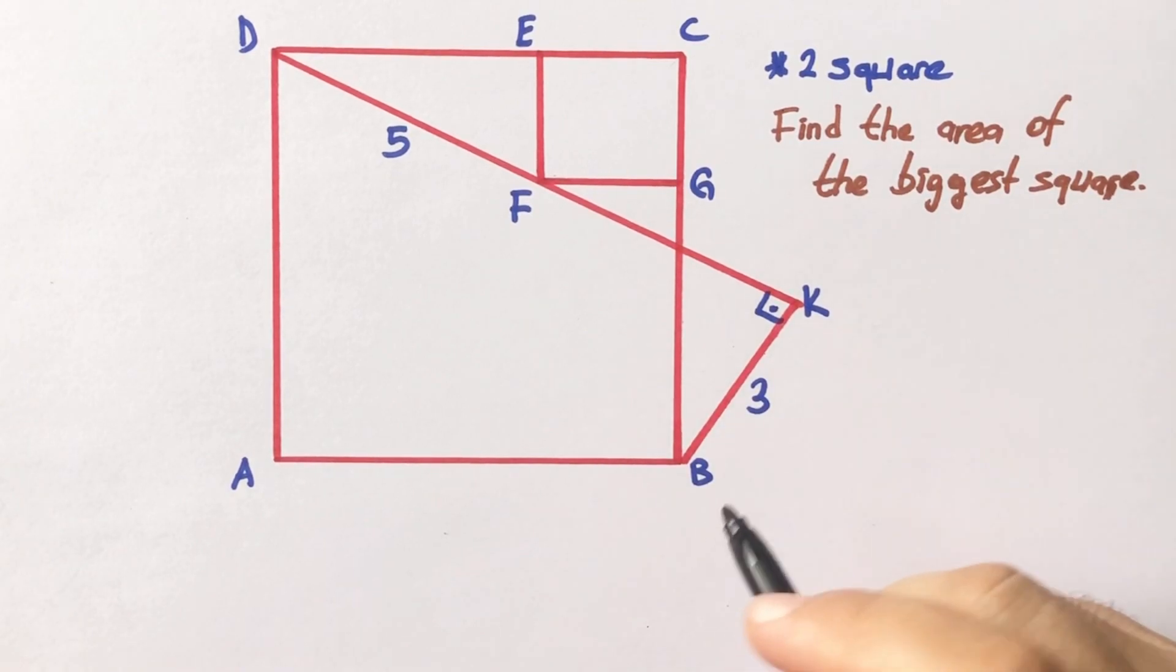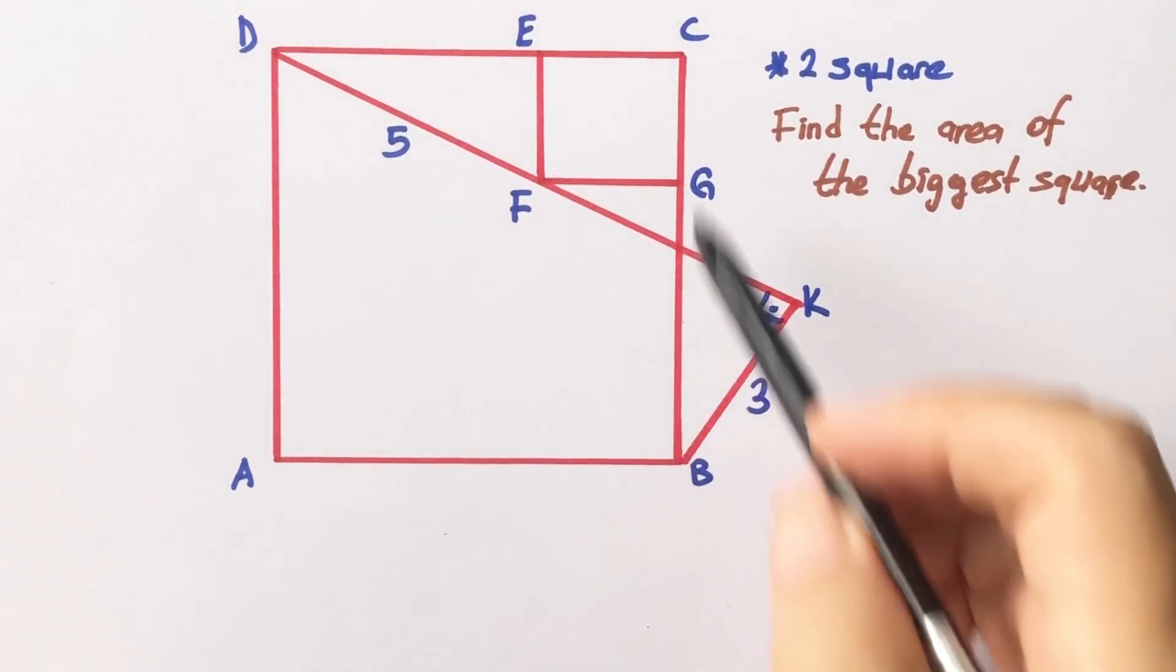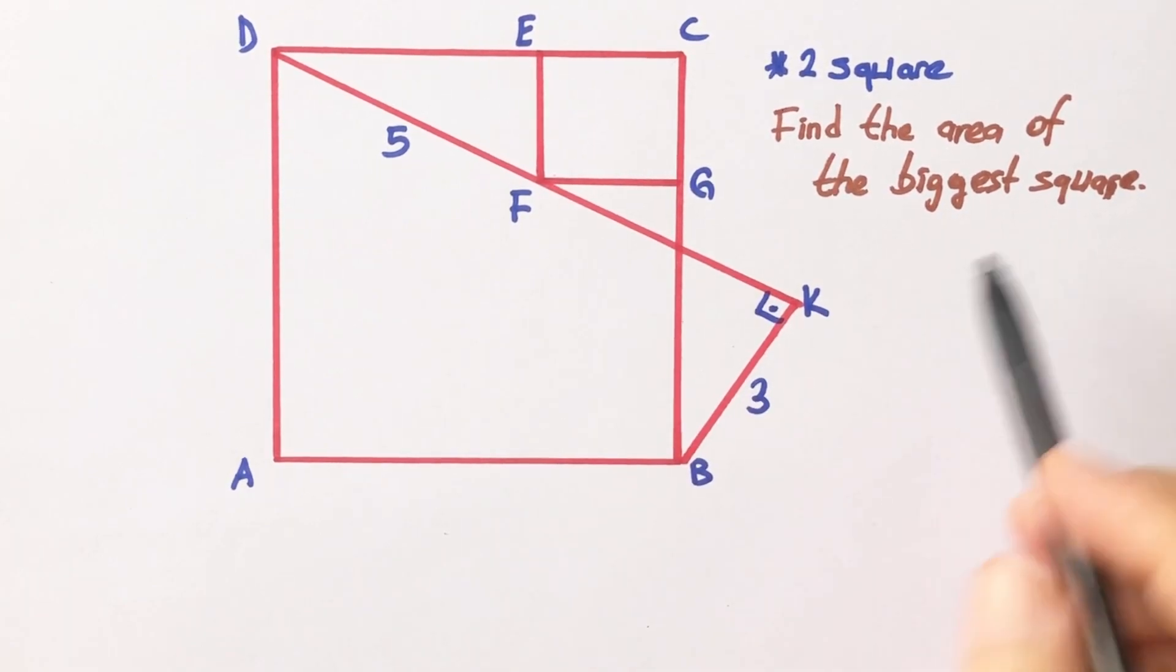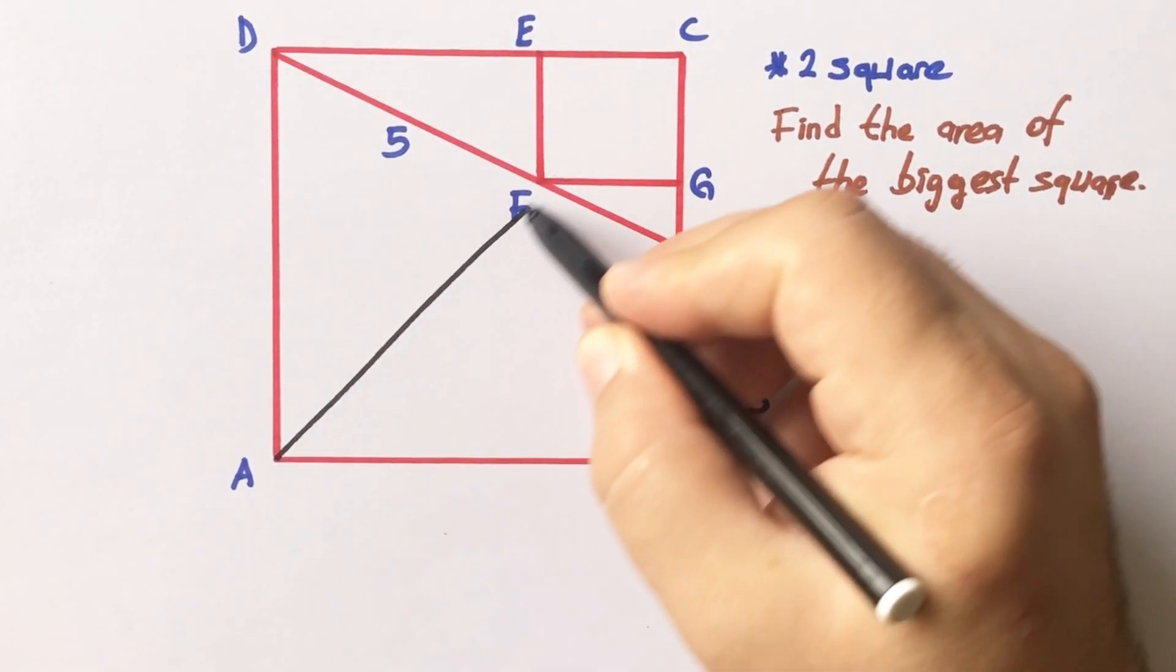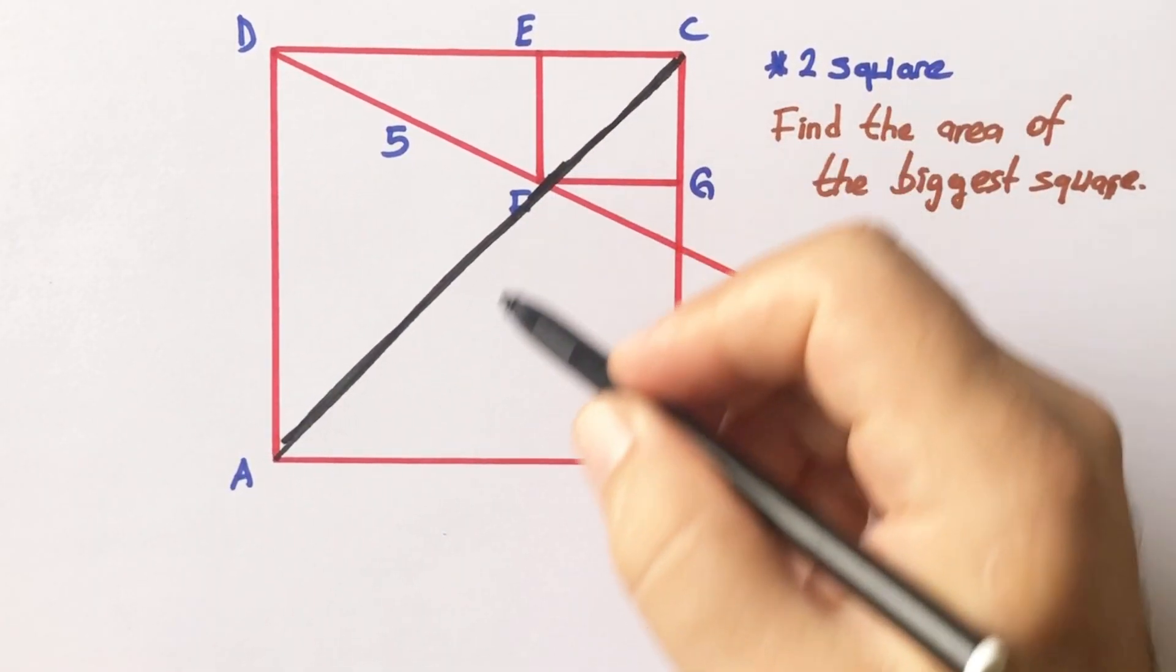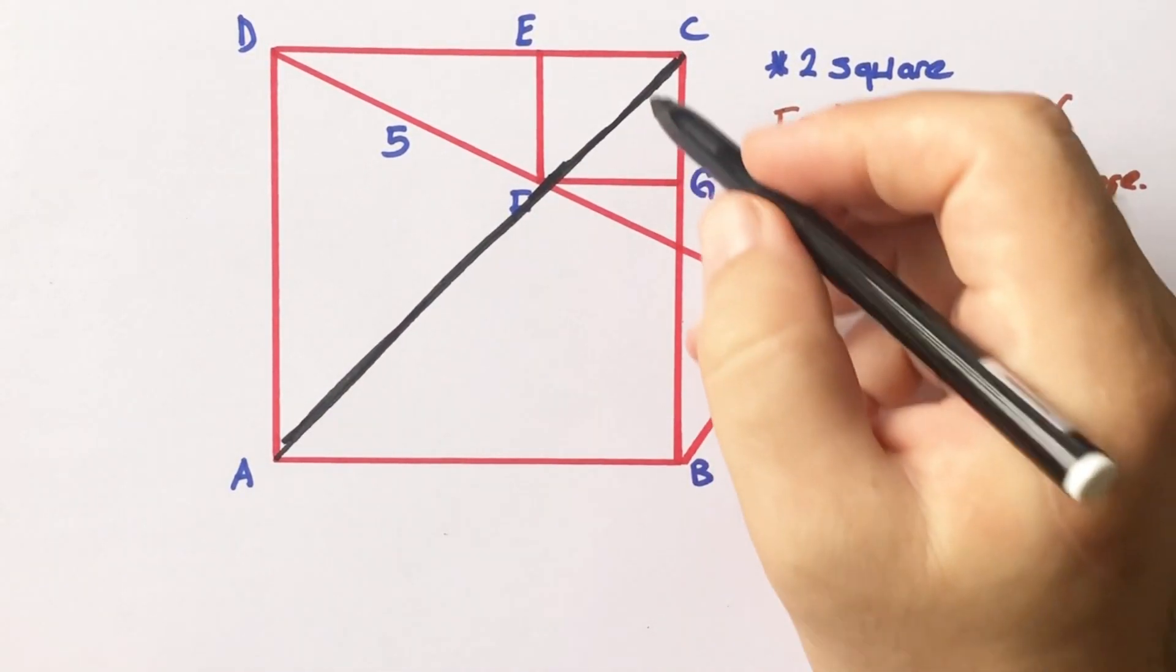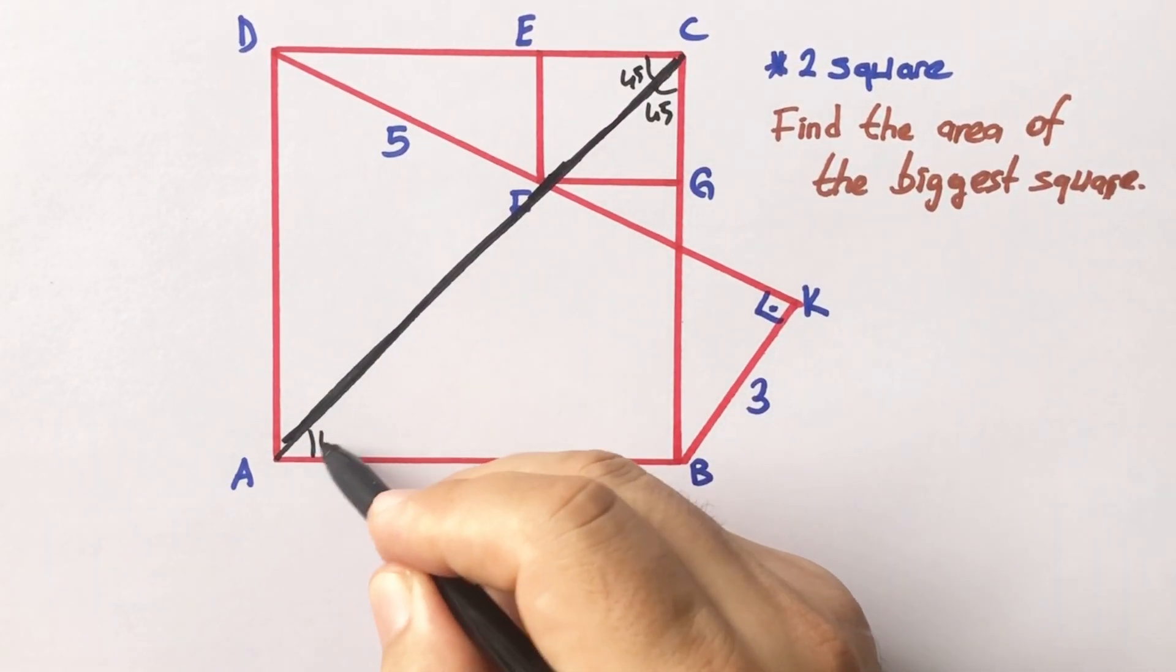Hello everyone, in this video we have two squares and some lengths are given, and then the biggest square area is asked. Okay, first step, if we draw diagonal of the square like this, we know that diagonal is a symmetry line of the square, right? Therefore these two angles must be 45 degrees.